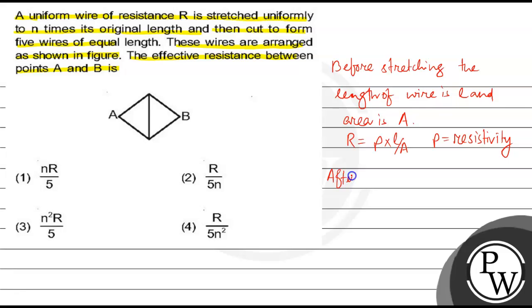After stretching, let's say length equal to L prime equal to N into L. And here we can write volume V equal to A into L. So V equal to A into L equal to L prime into A prime. Let's say A prime equal to the area after stretching. So A prime equal to A by N.